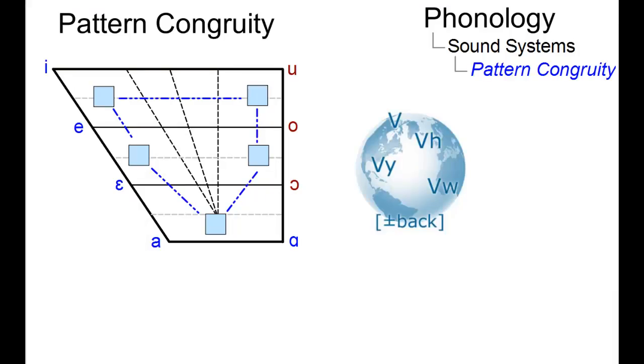Most languages have their vowels evenly and widely distributed over the chart, exhibiting a geometrically congruent vowel pattern. Here are some examples.